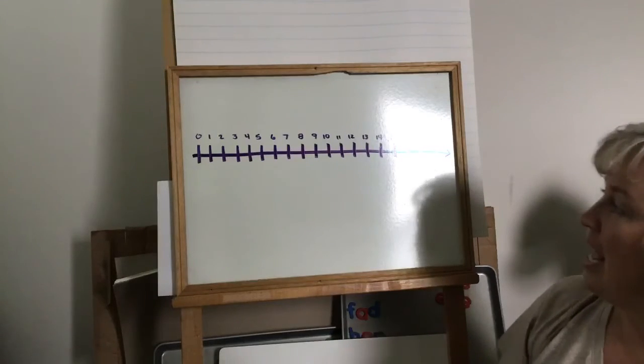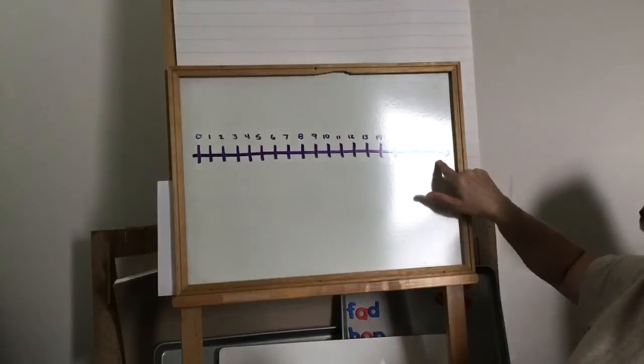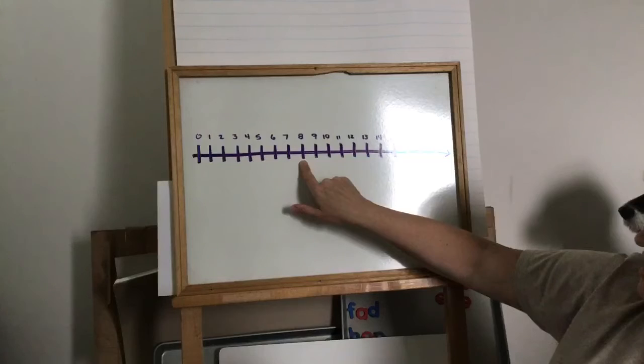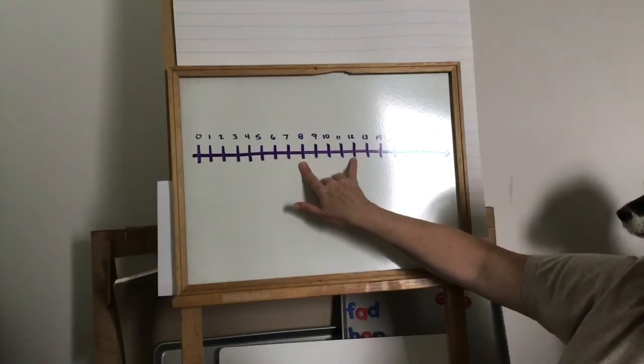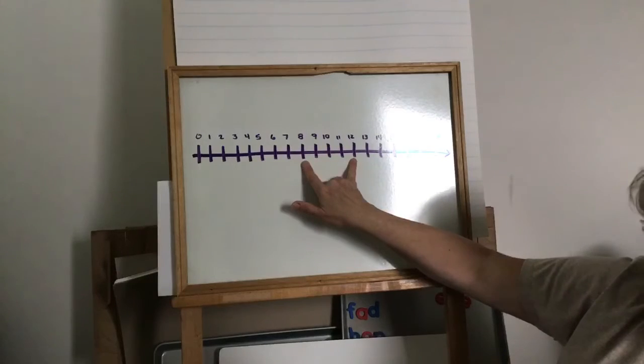It says, I am more than eight. So we have to start at eight. And it's something bigger than eight. I am less than twelve. So it's going to be a number in between eight and twelve.